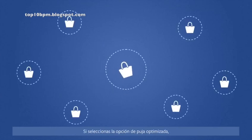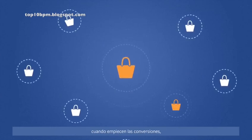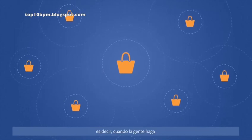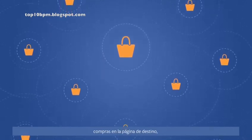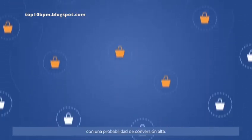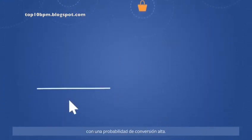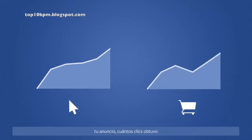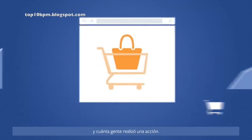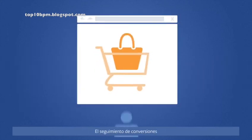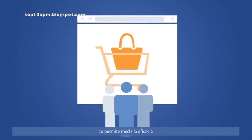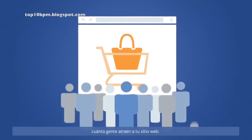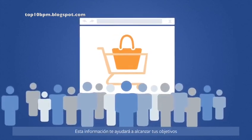And when you select Optimize Bidding, as people start to convert — that is, make purchases on the page you send them to — we can show your ad to even more people who are likely to convert. And when you get your ad's report from Facebook, you'll see how many times your ad was served and clicked, and how many people took an action. By using conversion tracking, you can measure just how effective your Facebook ads are at getting people to your site, so you can continue to reach your goals and help your customers take action.